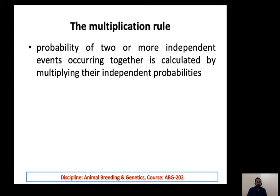Two events are independent of each other. For example, you flip a coin one time and get either head or tail — these outcomes are independent. The occurrence of a head on the first flip will not affect the occurrence of a head or tail on the second flip. When two events are independent, their individual probabilities are multiplied to get the combined probability.